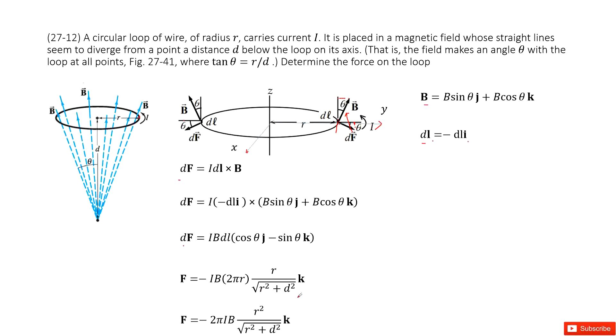The sine theta can be written as r over square root of r squared plus d squared. So this is sine theta. This is d, this is r, and this length is square root of r squared plus d squared.